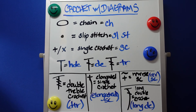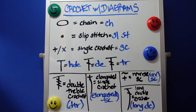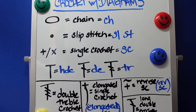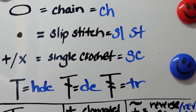Hello everyone, welcome back to Atreyu Crochet. In today's video we will be continuing with my crochet with diagrams series. First we're going to do a quick review of the six symbols and stitches that we learned in last week's video, and then we're going to learn four more. At the end of the video we're going to look at these new stitches in a diagram and crochet out that diagram.